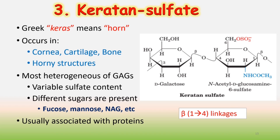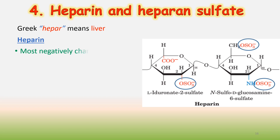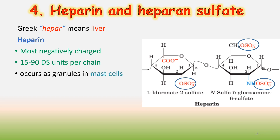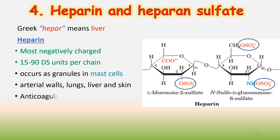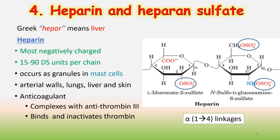The last category is heparin and heparin sulfate. Greek hepar means liver. Heparin is the most negatively charged GAG. It has 15–90 disaccharide units per chain and occurs as granules in mast cells, at arterial walls, lungs, liver and skin. Heparin is an anticoagulant — it makes complexes with antithrombin III, binds and inactivates thrombin, and has alpha-1,4 linkages.